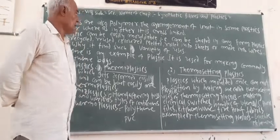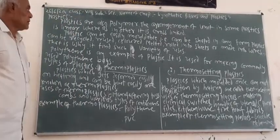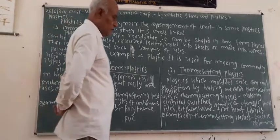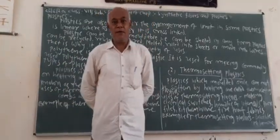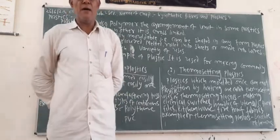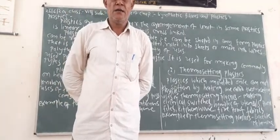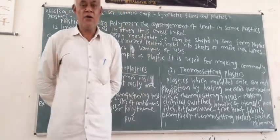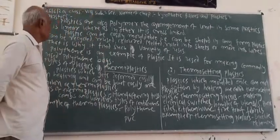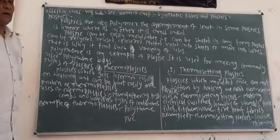Plastic is also a polymer. What is a polymer? We know that small units, called repeat units, are combined to form a large unit or long chain — this is called a polymer. Therefore, plastics are also polymers.